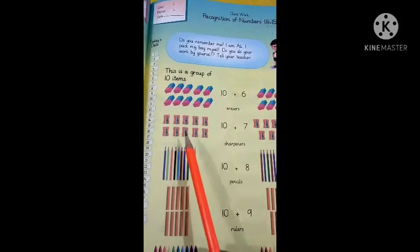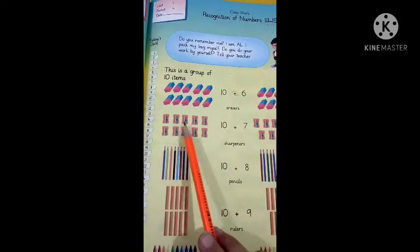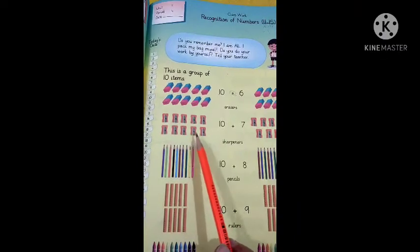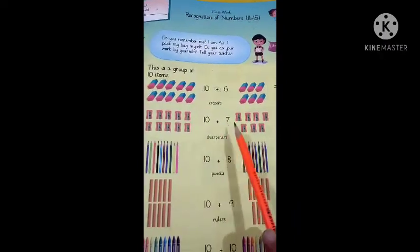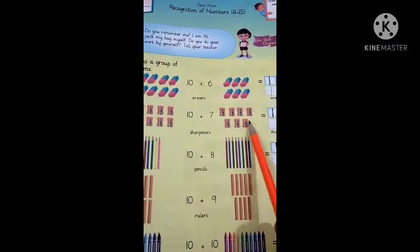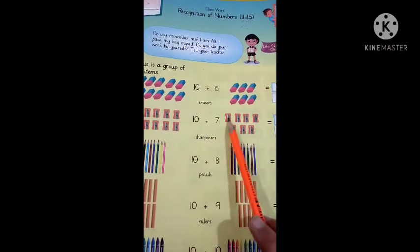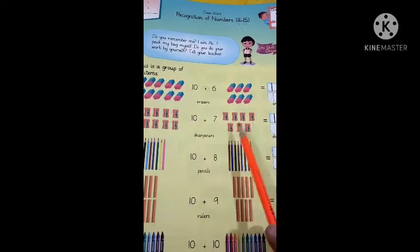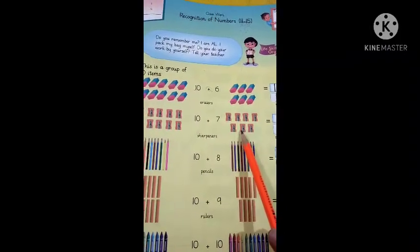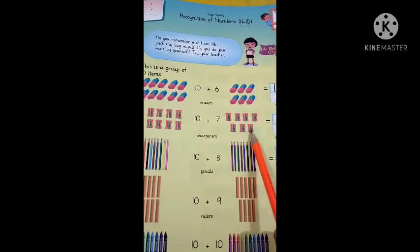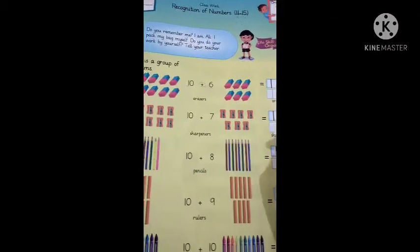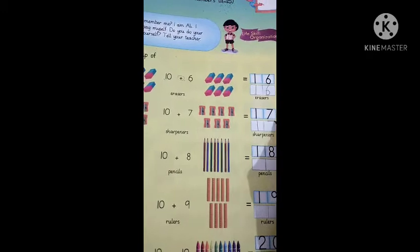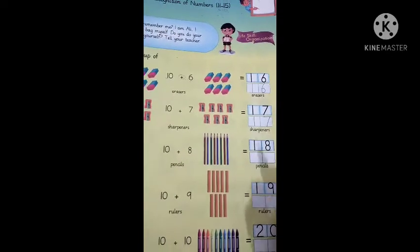Look at the sharpeners. There are ten. We will add seven more: eleven, twelve, thirteen, fourteen, fifteen, sixteen, seventeen. We will write one, seven — seventeen here. Seventeen.